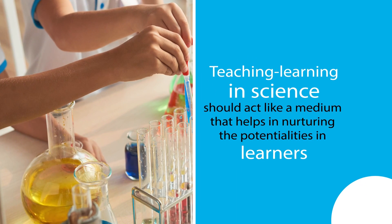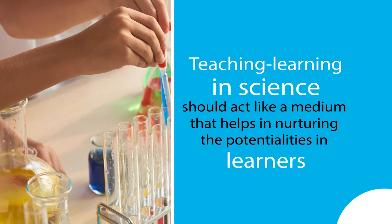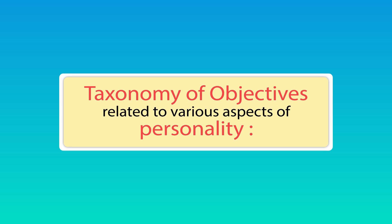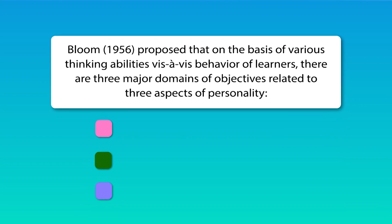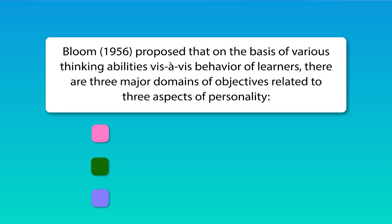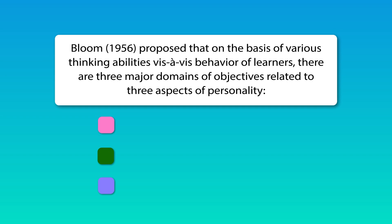All three aspects of science — scientific knowledge, scientific processes, and scientific thinking — should enable learners to develop various aspects of their personality. The teaching and learning of science should act as a medium that helps in nurturing the potentialities of learners. When talking of different aspects of personality, we refer to the taxonomy of objectives that Bloom proposed, where on the basis of various thinking abilities and behaviors of learners, there are three major domains of objectives.